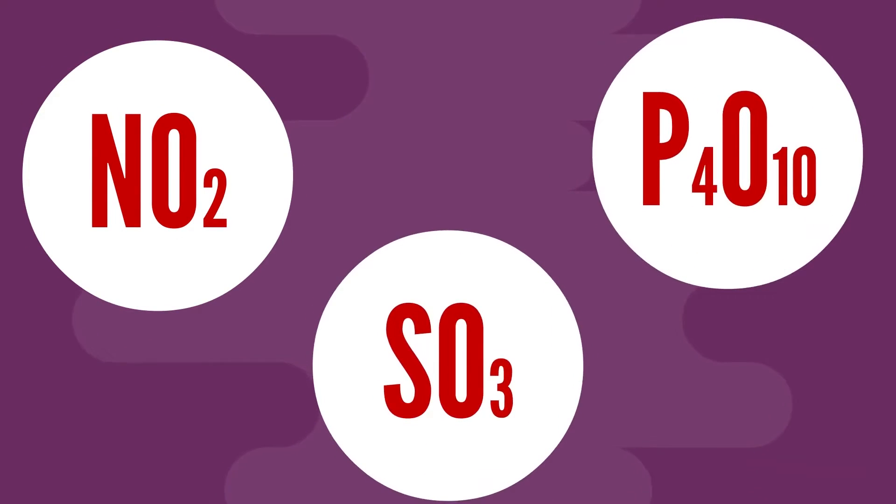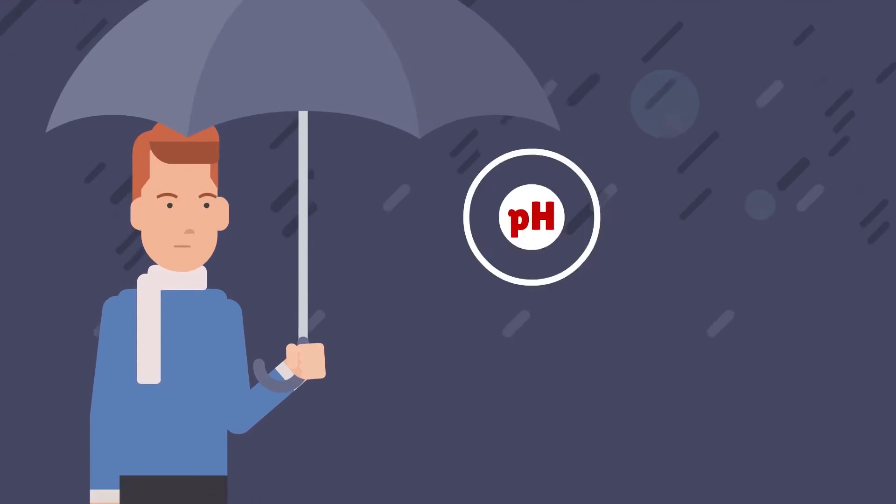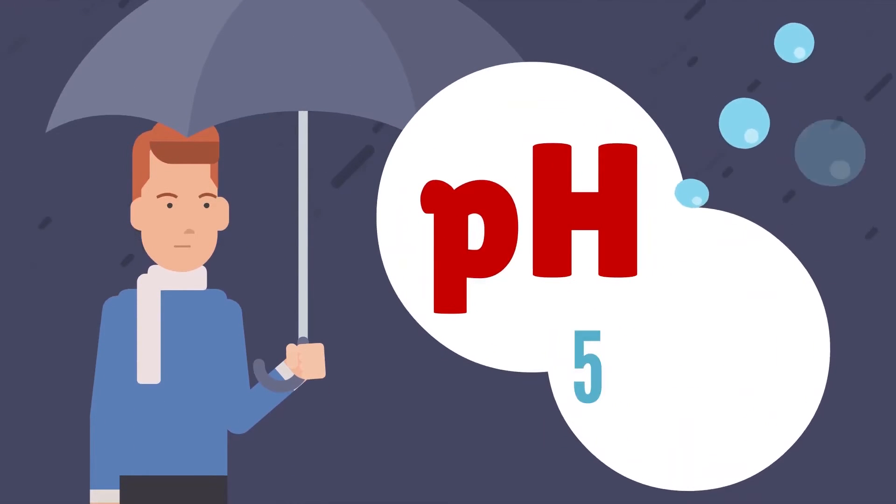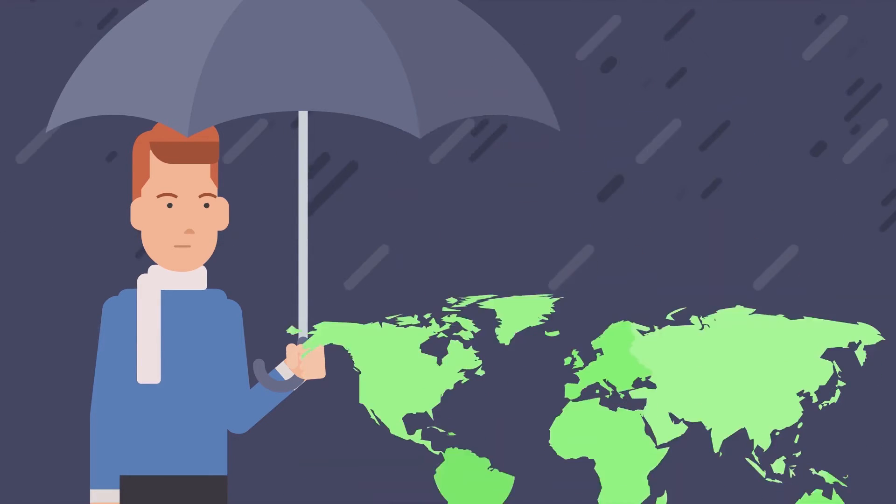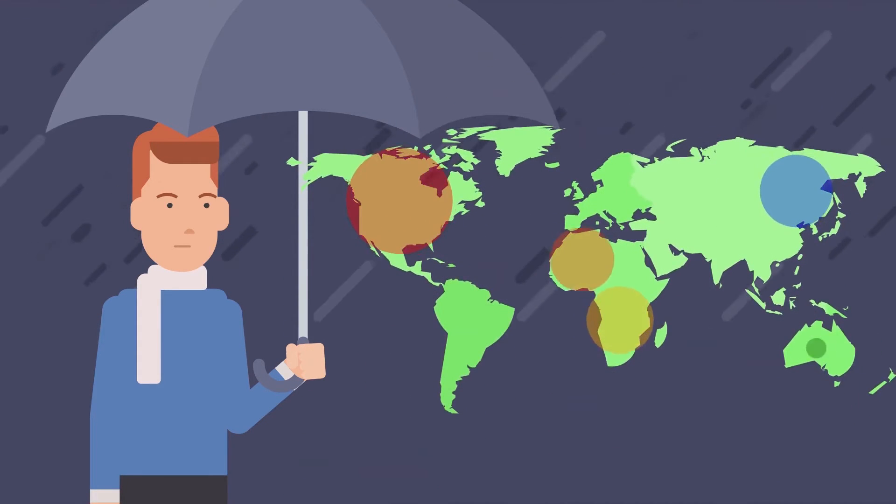Normally, the pH of rainwater should be equal to 5.6 to 5.7, but the value of this indicator may vary significantly in different places due to the difference in the composition of atmospheric gases.